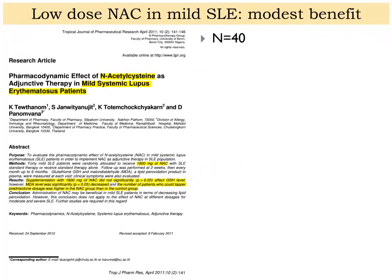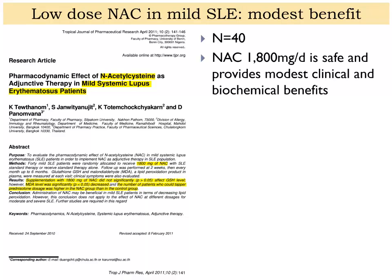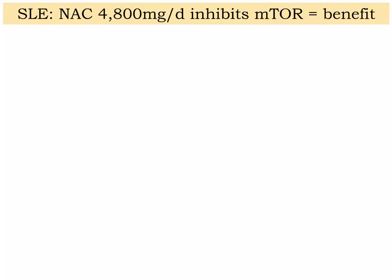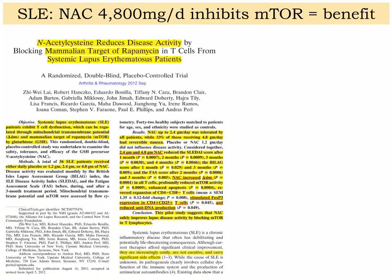In another case series of about 40 patients, NAC at 1800 milligrams was proven safe and provided modest clinical and biochemical benefit. In my opinion the dose was too low, especially when we look at the next research by Lai published in 2012. That study used higher doses — 4800 milligrams per day, about 1600 milligrams three times per day — and showed that it blocked mTOR and provided major clinical benefit. This was published by the American College of Rheumatology in Arthritis and Rheumatology, September 2012.